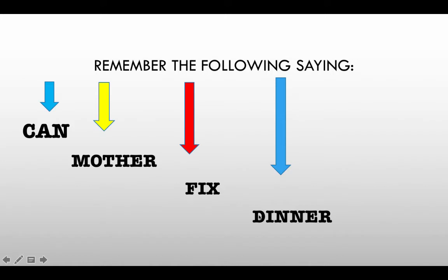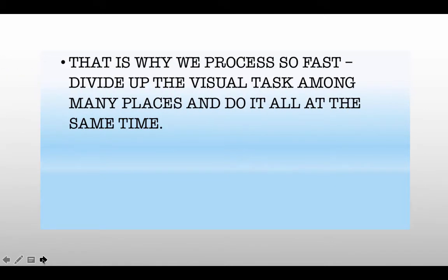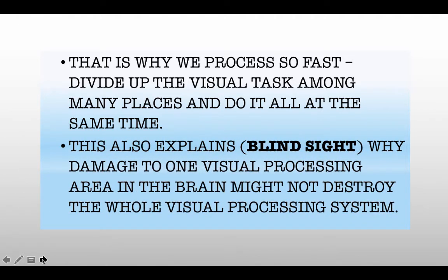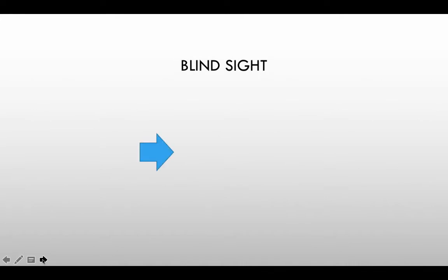A little mnemonic device to help you remember that a visual scene is broken up into the simple features of color, separate from motion, separate from form, separate from depth. This explains why we can process a visual scene so fast because we can do many things at once. It also explains an interesting phenomenon called blind sight — when our eyes function perfectly well and the information gets to our visual cortex, one of those areas in our visual processing system gets broken. We don't lose all of our visual processing, but we just lose some of it.